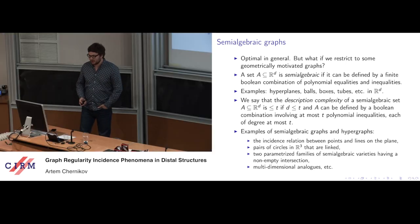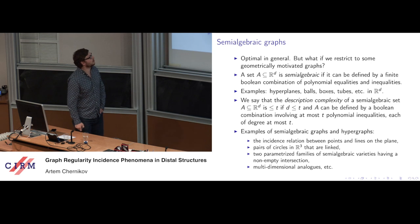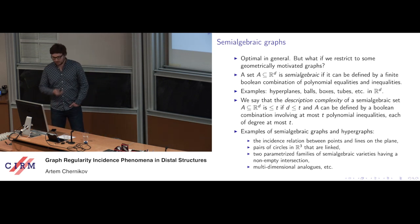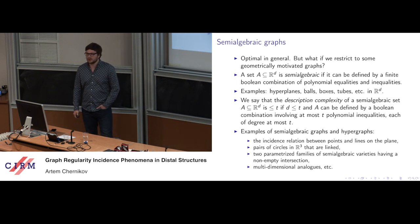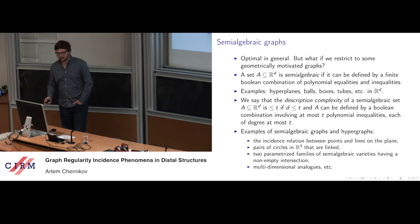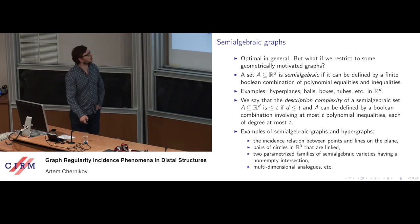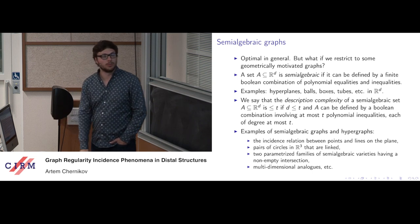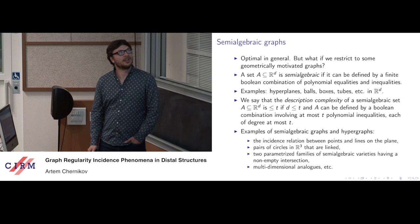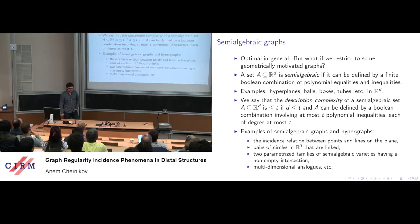For context: a set A, a subset of R^d, is called semi-algebraic if it can be defined as a Boolean combination of polynomial equalities and inequalities. Most basic geometric shapes in real space are semi-algebraic — every finite set, balls, lines, boxes. The description complexity of a semi-algebraic set A is bounded by T if it can be defined by a Boolean combination involving at most T polynomial inequalities, with all polynomial degrees bounded by T.